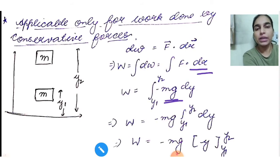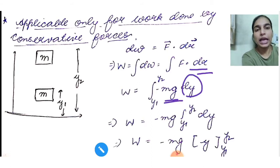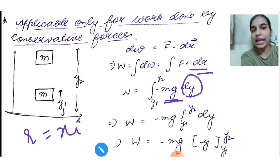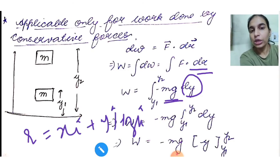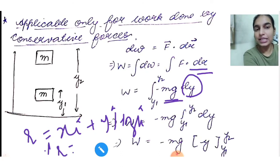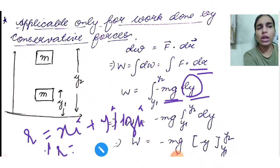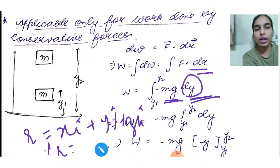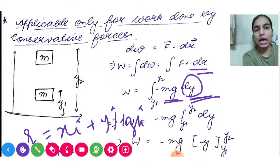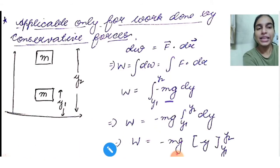The displacement vector is written as dx i-cap + dy j-cap + dz k-cap, as covered in the last class. Since motion is only in the Y direction, we only need the Y component; the rest are zero. So integrating from Y1 to Y2, with mg constant taken outside, gives W = −mg × [Y]_(Y1 to Y2) = −mg(Y2 − Y1) = −mgY2 + mgY1.